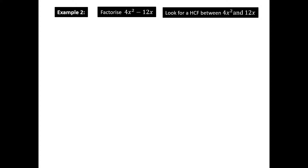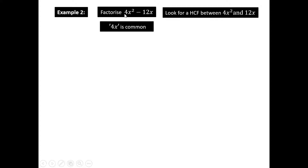Example 2: factorize 4x² − 12x. Look for the highest common factor between 4x² and 12x. We know that 4x is common because 4x multiplied by x gives 4x², and 4 can also go into 12 three times. So 4x is common.